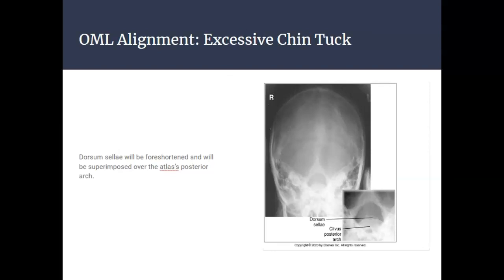In the case where the OML alignment is inadequate and we have excessive chin tuck, the dorsum sellae will be foreshortened and will be superimposed over the atlas's posterior arch. You can see the atlas's posterior arch in the image and the dorsum sellae superimposing over that portion. We need to realign the OML so that it is perpendicular with the IR to achieve the appropriate image.